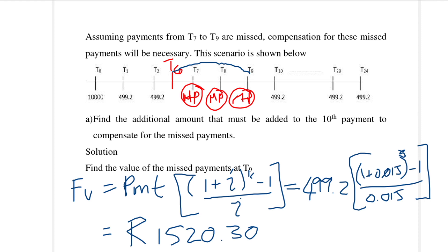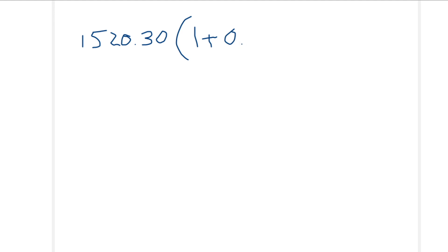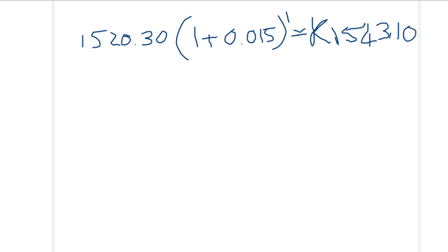The second part is to move the value of the missed payments from time T9 to time T10. To move it one time period, we take that 1,520.30 and move it forward one time period.